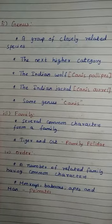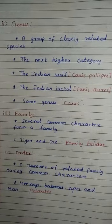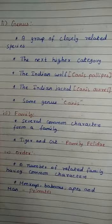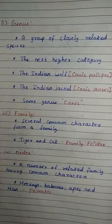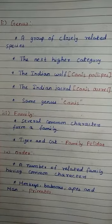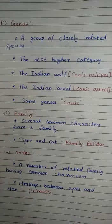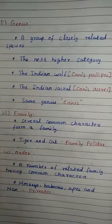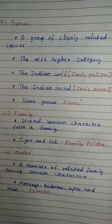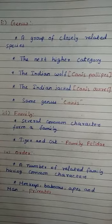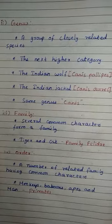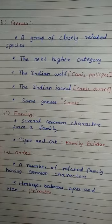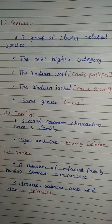The next category is Order. A number of related families having common characters are placed in an order. Monkeys, baboons, apes, and man, although belonging to different families, are placed in the same order Primates, since all these animals possess some common features.